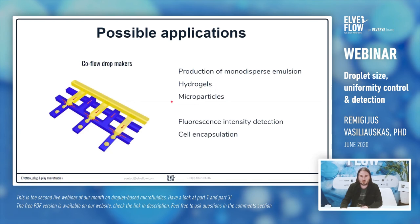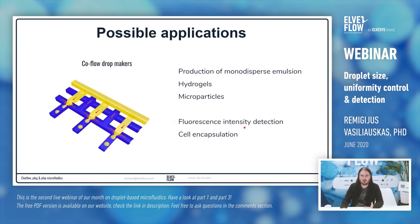You can also produce other microparticles, for example for drug encapsulation. Additionally, you can reverse the system: if you assume your droplets are the same size, you can measure fluorescent intensity detection. If you are encapsulating cells and your cells are producing some fluorescent material, you can check which cells are producing more of the substance you need, and then sort the cells and collect them.